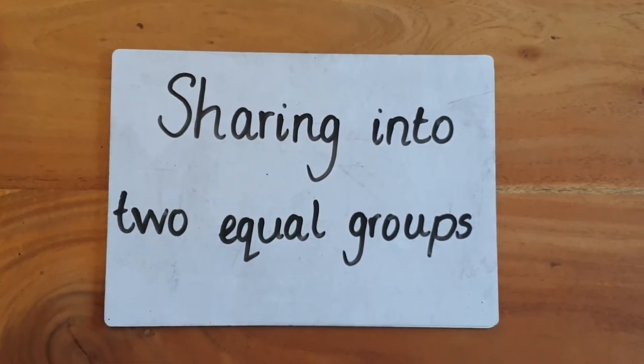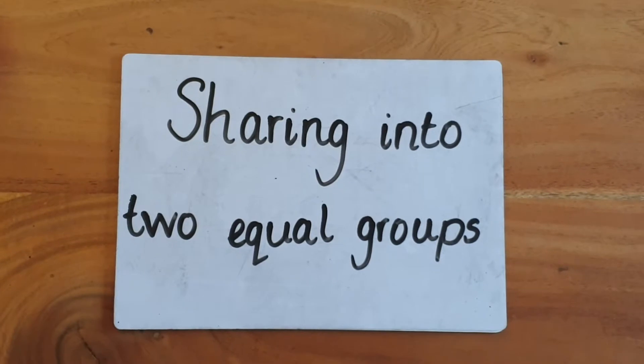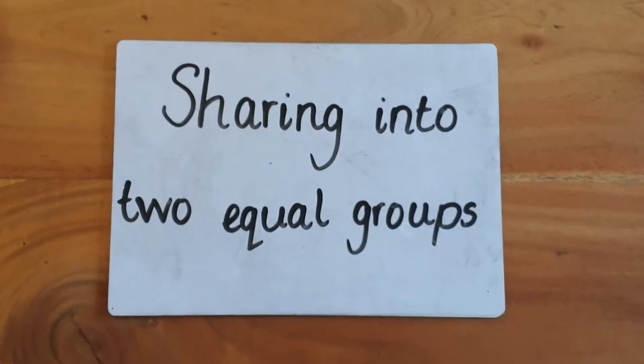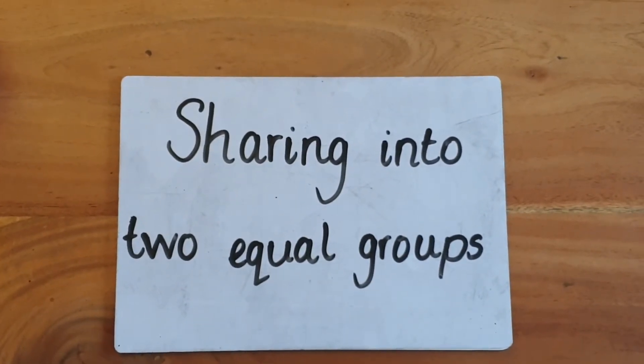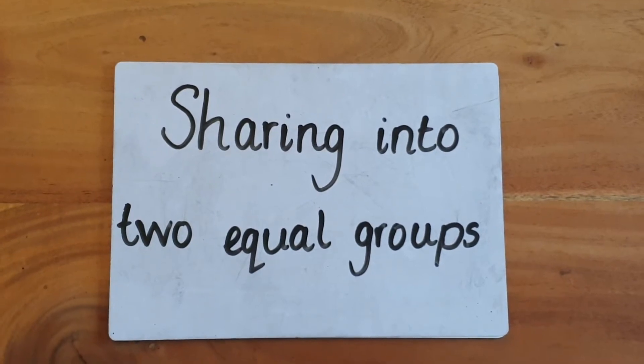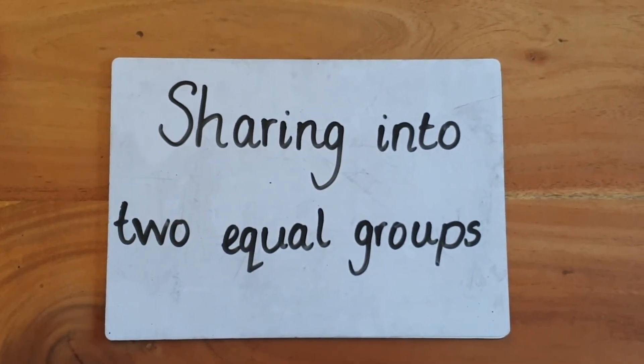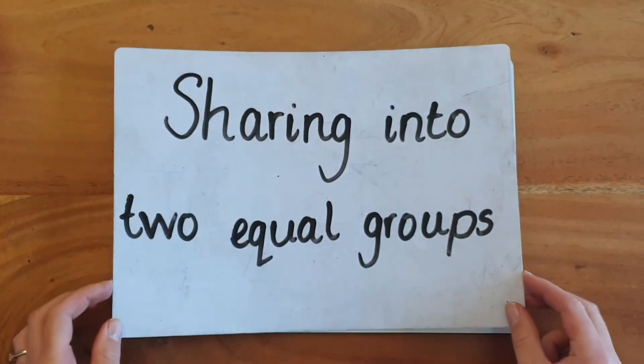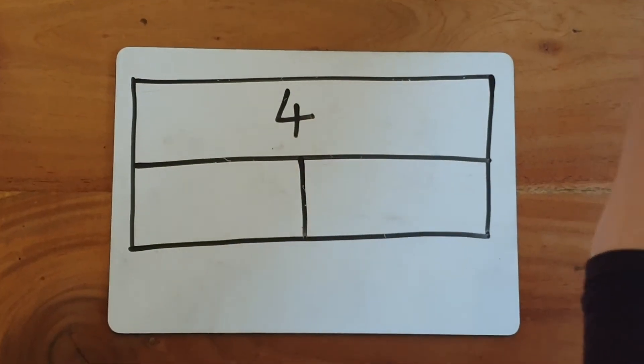We're going to look at how we can share into two equal groups. Remember, the word equal means that we'll have the same amount or the same number in each group. We're going to use the bar model.